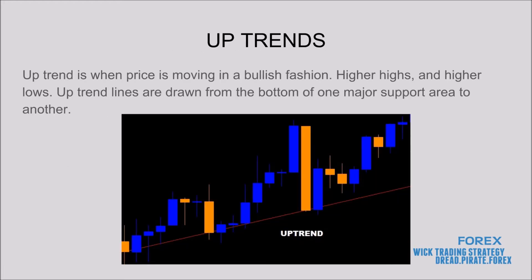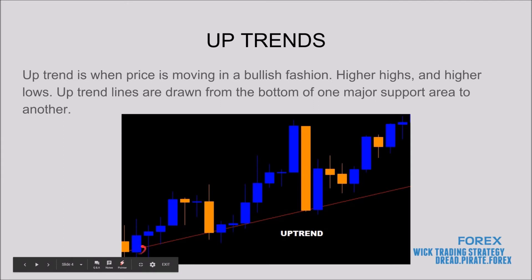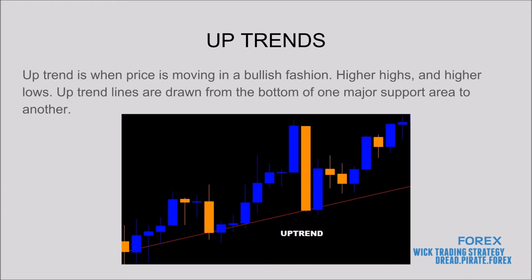An uptrend is when price is moving in a bullish fashion — you're going to have higher highs and higher lows. Uptrend lines are drawn from the bottom of one major support area to another. As you can see here, it starts at one support area and continues to the next support area, and it just continues up as long as there's an uptrend. You draw it from the bottom support point to the next lowest support point on the chart.